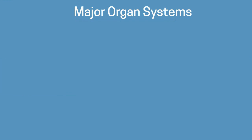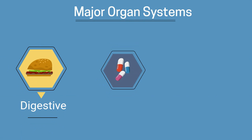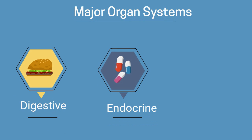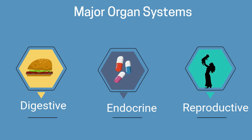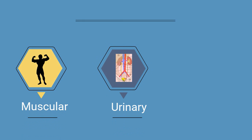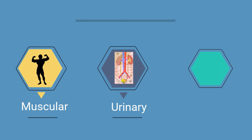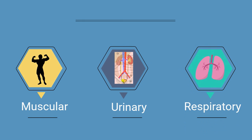Let's first review the 11 major organ systems of the body. Let's begin with the digestive, the endocrine, the reproductive system, the muscular, the urinary, and the respiratory system.